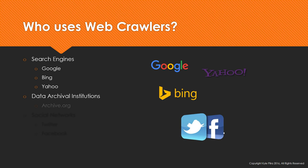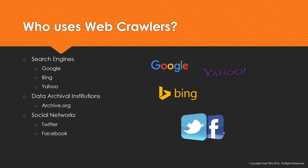So, who uses webcrawlers? Mainly search engines — Google, Bing, Yahoo. Yahoo actually doesn't use too much of a webcrawler; they do have one, but they mostly aggregate data from Bing. Other users include data archival organizations — a pretty big one is archive.org. Some social networks like Twitter and Facebook use a form of webcrawler to fetch metadata on pages linked to in tweets and Facebook posts. If you ever see a tweet or a Facebook post formatted very nicely, it usually has open graph data or Twitter card metadata in it.